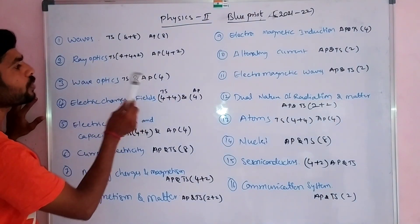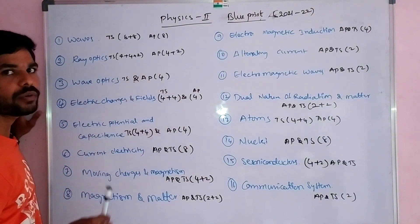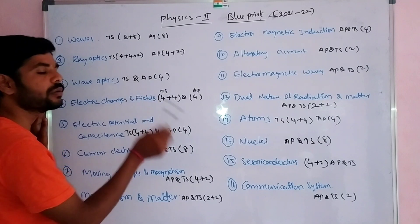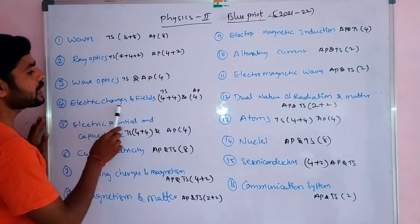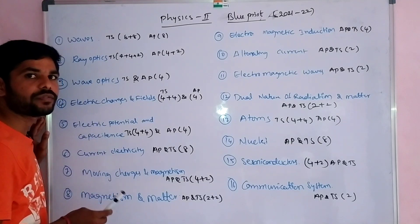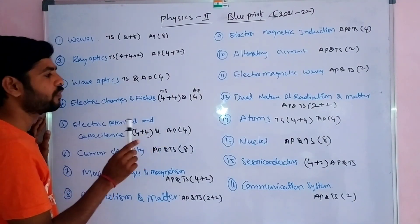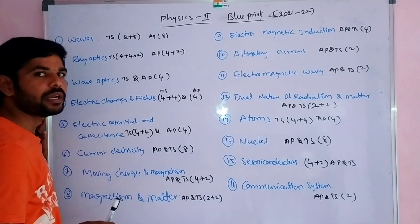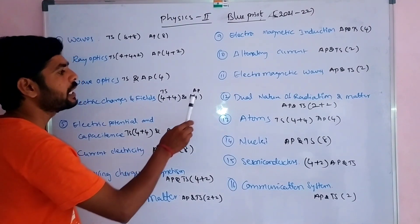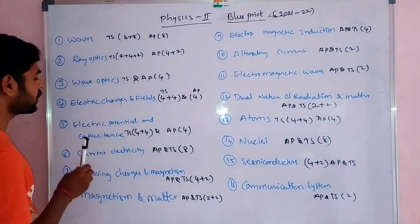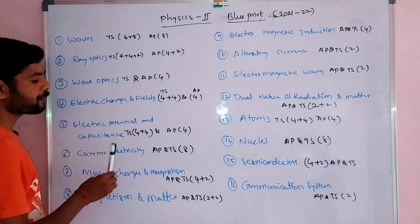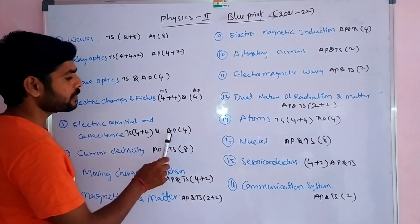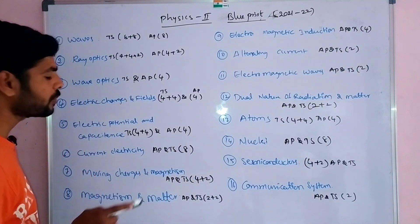For Wave Optics, both AP and Telangana have a 4-mark SAQ question. For Electric Charges and Fields, Telangana has 2 SAQ questions with 8 marks weightage, while AP has only a 4-mark SAQ question. For Electric Potential and Capacitance, Telangana has two 4-mark questions giving 8 marks weightage, and AP has only a 4-mark SAQ question.